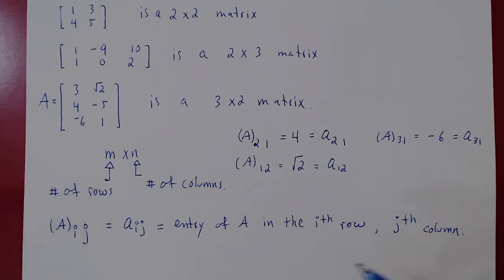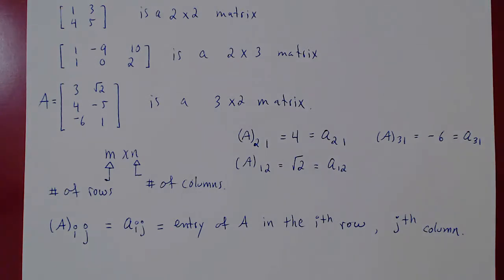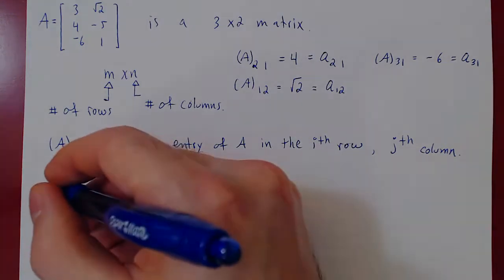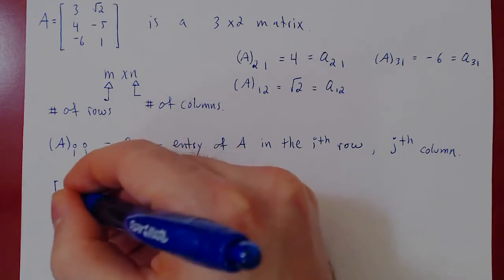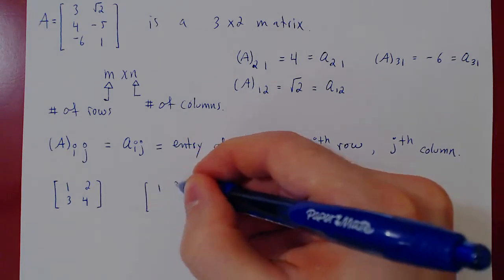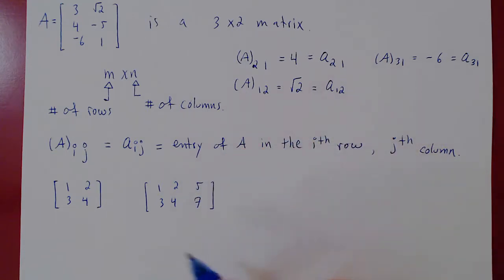Now that we have this notation and the idea of a matrix, the first natural question is: what does it take for matrices to be considered equal? Let's look at a few examples. Consider the matrix 1, 2, 3, 4 and the matrix 1, 2, 3, 4 with an additional third column 5, 7. Right away, equality means they are exactly identical. But here we have a 2×2 matrix and a 2×3 matrix, so they are not equal because they don't have the same size.